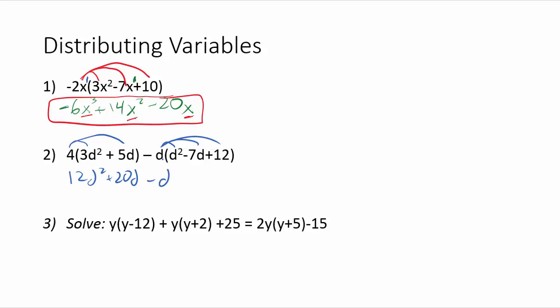So d times d squared will be and if you're thinking this is going to be a 2d something it's not. We've got 1 times 1 is 1 so that's a 1 and then d times d squared is d to the third. This would be plus 7d squared and then if we multiply this last d in it would be 12 minus 12d.